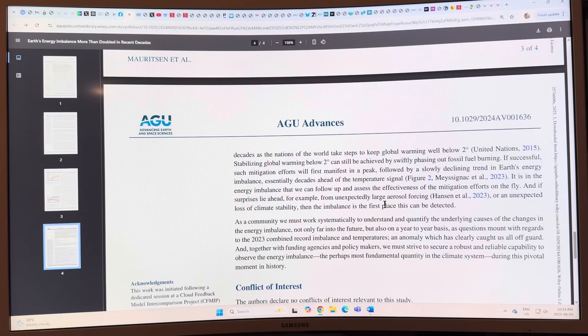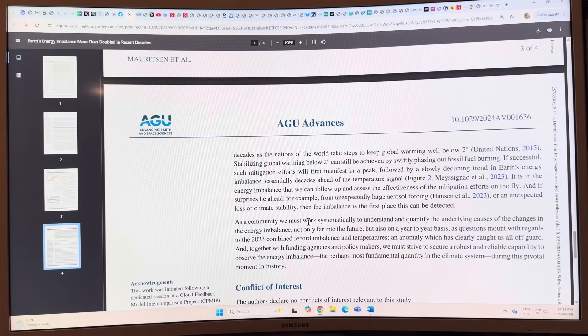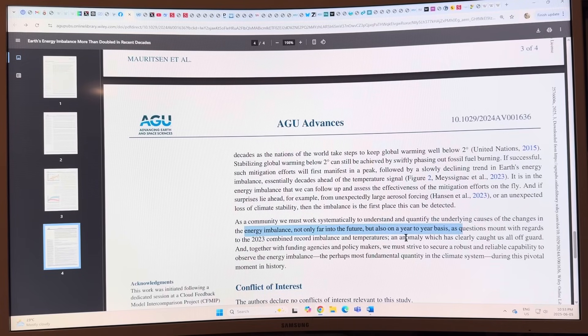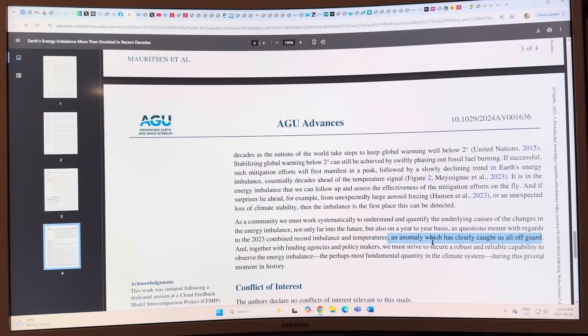This is going to be a problem. They're saying the community must work to understand and quantify the causes of the changes in the earth imbalance, not only far into the future but on a year to year basis. The anomaly has clearly caught us all off guard. Well, they should all go to James Hansen and follow his work, whatever he puts out, and they won't be caught off guard. That's my comment again.